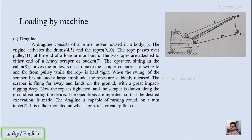The operator operates drums 4 and 5 so the scrapper or bucket moves to and fro with higher velocity. When the swing of the scrapper has attained a larger amplitude, the ropes are suddenly released. When the movement is at high intensity, the rope is released suddenly and the scrapper falls on the ground. The scrapper is flung far away and lands on the ground with great impact, digging deep. Then the rope is tightened and the scrapper is drawn along the ground gathering the debris.